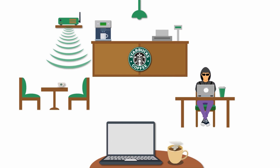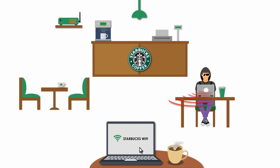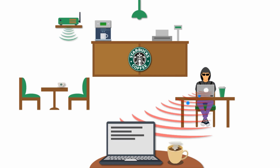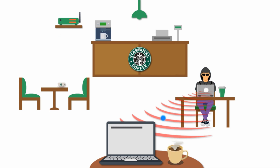After having gathered all information, the attacker then sends out his own radio signal using the same name as the legitimate access point. To end users, the Evil Twin looks just like a legitimate hotspot with a very strong signal — because the attacker has physically positioned himself near end users so that his signal is likely to be strongest. To end users, only one hotspot with a stronger signal shows.